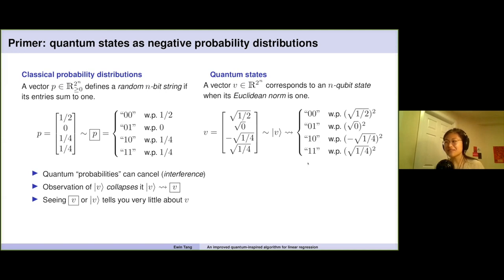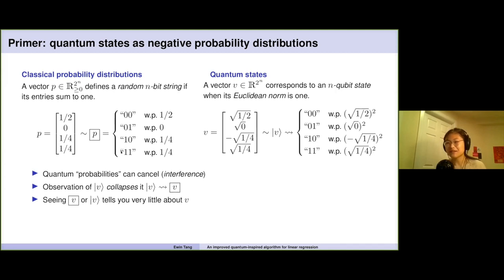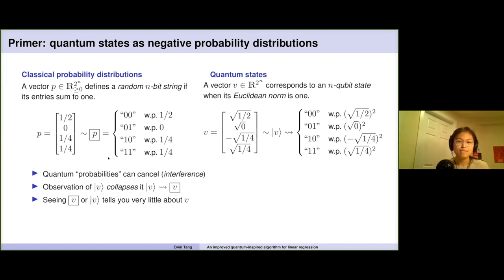If you look at these runtimes, the reason these algorithms are so appealing is because they get time polylogarithmic in the dimension. However, we get very little information about our output vector. That still doesn't mean there's no speed up — it just means you have to try harder. I'm not going to go over the full quantum landscape, but you can ask questions about it after. Thanks.